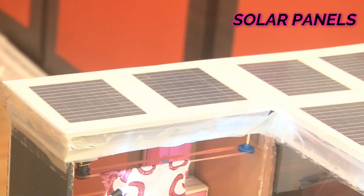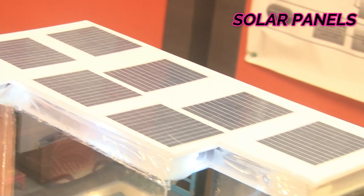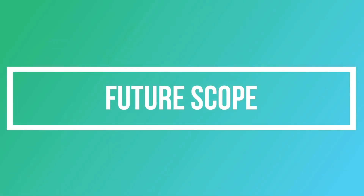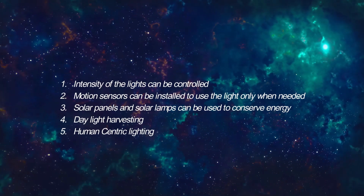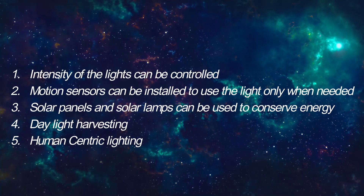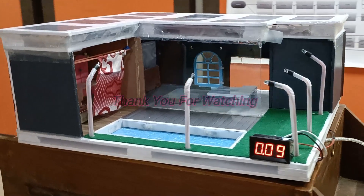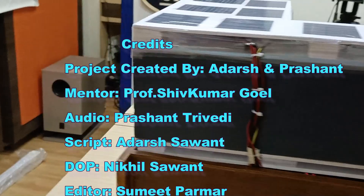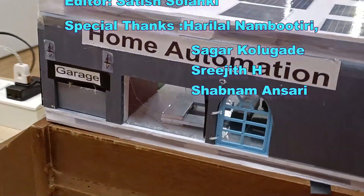We have fixed several solar panel stickers on the roof to move our project forward in the green energy domain. In future, the intensity of the lights can be controlled, motion sensors can be installed to use light only when needed, and solar panels and solar lamps can be used to conserve energy. Additional features include daylight harvesting and human-centric lighting. Thank you.